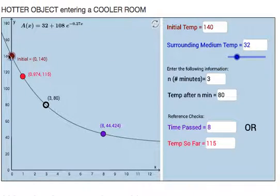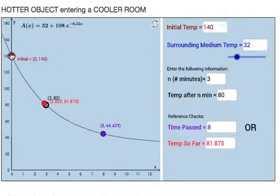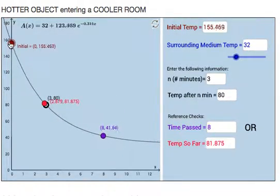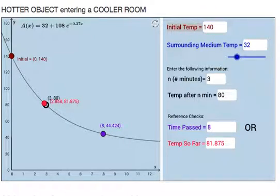So notice with this applet here, this maroon point is the initial temperature of the object. You can adjust the initial temperature of the object here. In this case, we could put it at 1, or you can go to the text box up here. You could type it in. This point and that text box are connected here. So let's make it 140 degrees just for the sake of illustration.